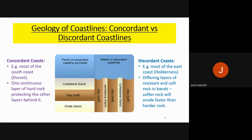One key thing to remember about the geology of coastlines is that there are two main types in the UK: concordant versus discordant. A concordant coastline, like most of the south coast — for example Dorset — is where you have one continuous layer of hard rock, in this case limestone, protecting the rest of the coastline behind it. That single layer of hard rock protects the softer rock behind it all the way along.